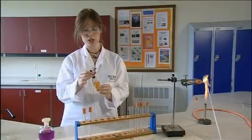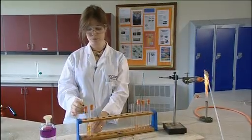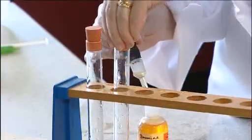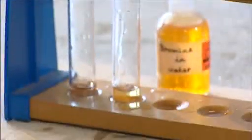To the fifth tube you can add a few drops of bromine water which is just bromine dissolved in water. And shake it up and you can see that the bromine goes colourless. This shows the presence of an alkene or carbon-carbon double bond.